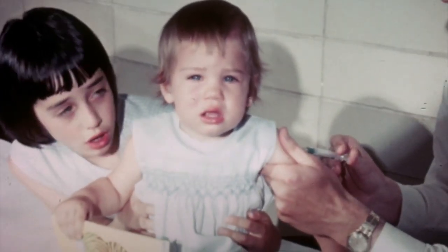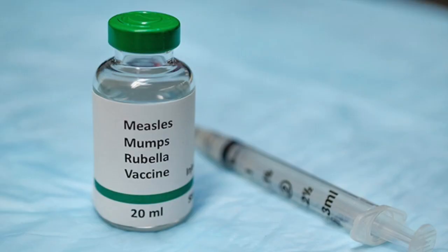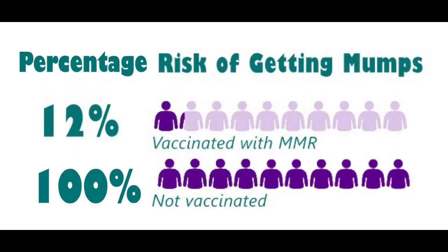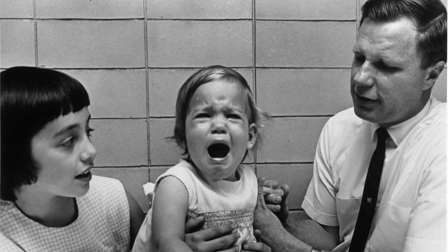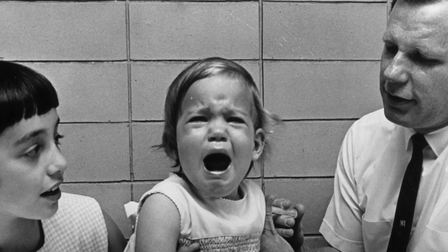Despite the fact that mumps has been around for thousands of years, it was not until the 1940s that a vaccine was developed to prevent it. Today, the measles, mumps, and rubella vaccine — MMR — is the most effective way to protect against mumps, measles, and rubella. It is important to note that the vaccine does not provide complete immunity, but it can greatly reduce the likelihood of contracting the virus and experiencing severe symptoms. The MMR vaccine is 88% effective after two doses and 78% effective after one dose. Children aged 5 to 14, unvaccinated individuals, African Americans, and Hispanics are individuals most susceptible to mumps.